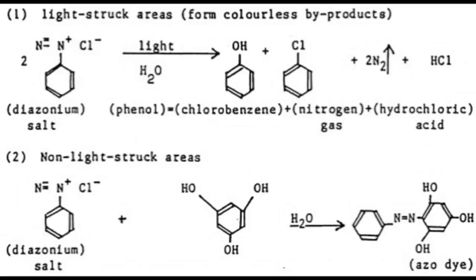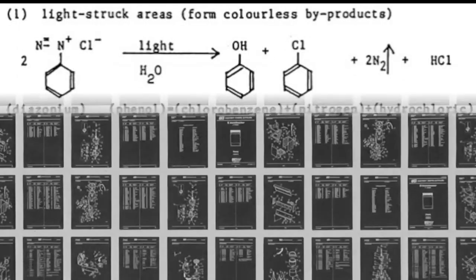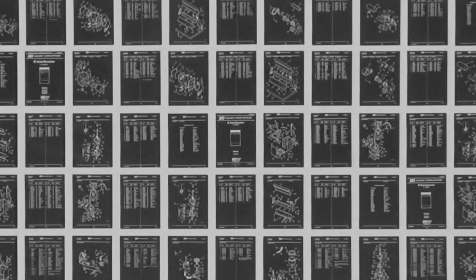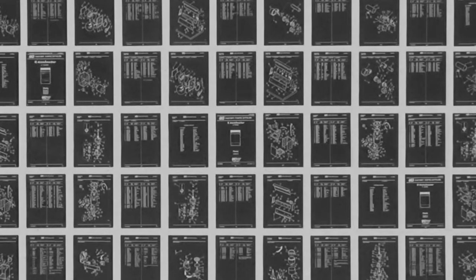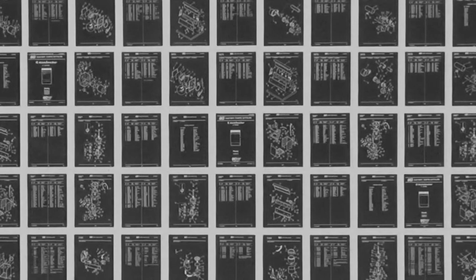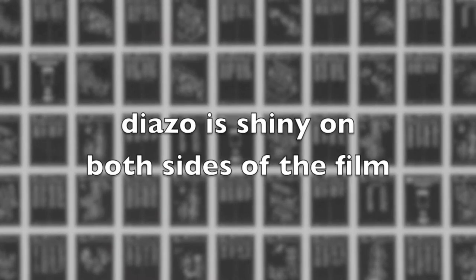Diazo emulsion uses diazonium salt and dyes to create a very dense emulsion. The dye come in a variety of colors including black which is most common and happens to look very much like silver halide. The best way to know the difference is that diazo emulsion is shiny on both the emulsion and film base sides.